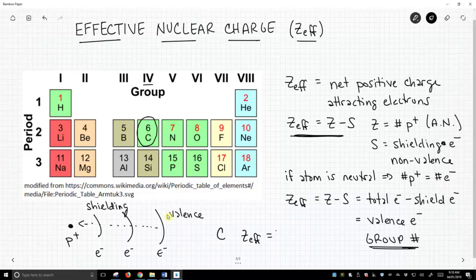...effective nuclear charge is going to be equal to four. Now, remember, your group numbers aren't always in these Roman numerals, or right up top here. Sometimes they're in these Arabic numbers. Those are 13, 14, 15, 16, 17, 18.